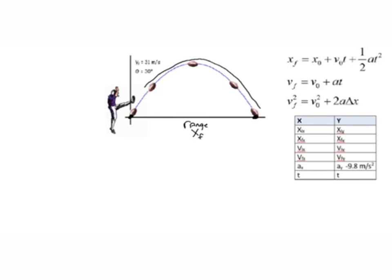We're going to take our starting position in the x and y direction to be x equals zero and y equals zero, because we can decide wherever we want our coordinate system to start. So let's start filling in our table with the information that we have. Our football is kicked with an initial velocity of 31 meters per second at an angle of 30 degrees to the horizontal.